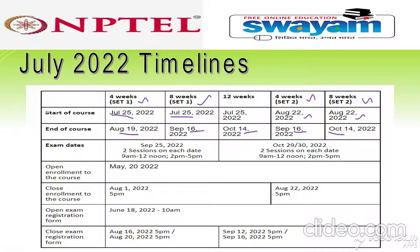The exam date for Set 1 four-week and eight-week courses is September 25th and 15th respectively, with two sessions each. One date given is September 21st with two sessions: morning session from 9 AM to 12 noon, and afternoon session from 2 PM to 5 PM.